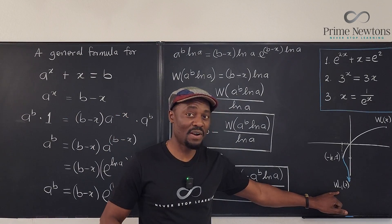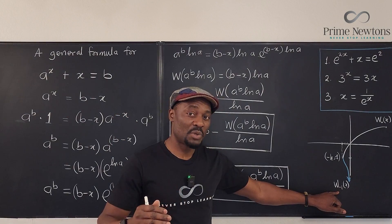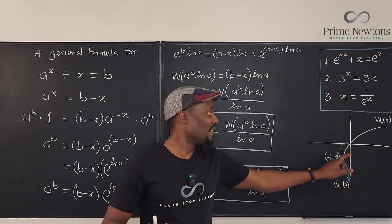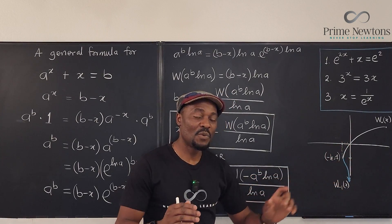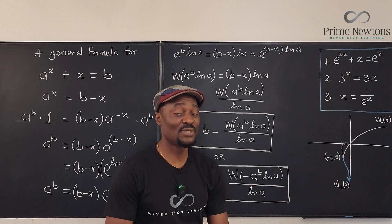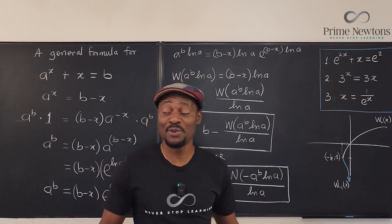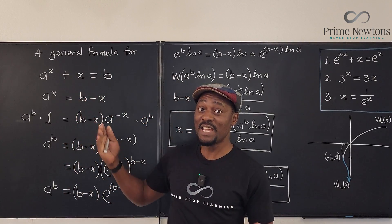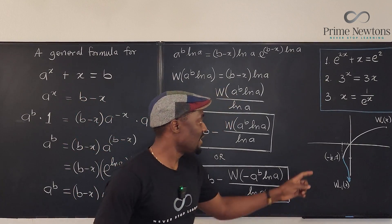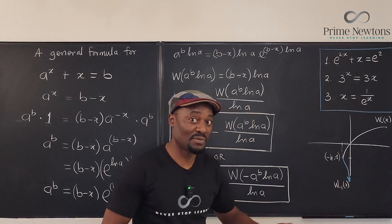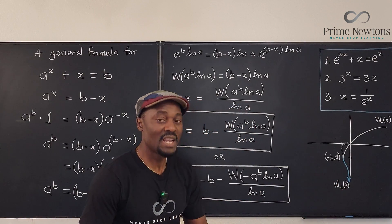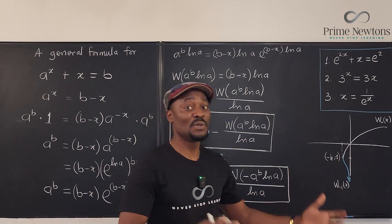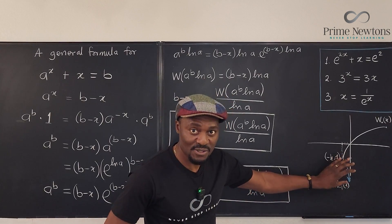This is the graph of the Lambert W function. These two branches are the ones that give us real answers. That is when you try to find the real values that are solutions to any equation that looks like this. These are the only two branches that provide you with real solutions. The others will give you solutions that are not real, but I want to focus on these two.